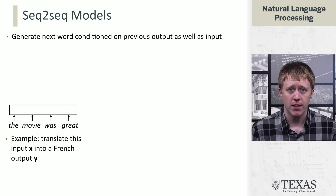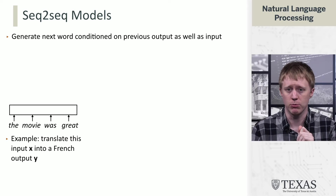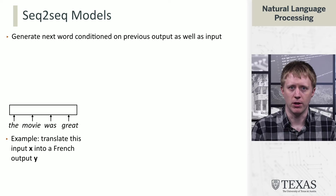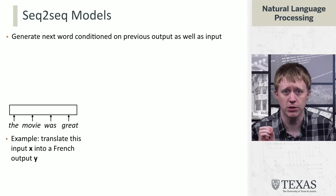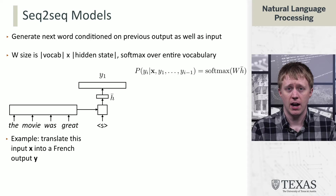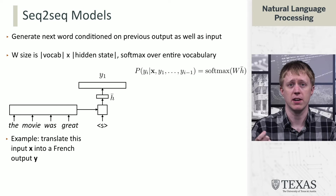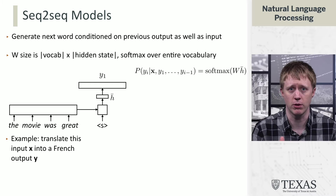So what are seq2seq models? These are models that generate next words conditioned on the previous output — very similar to what language models do — as well as their input. If we want to translate a sentence into French, we have an input x ('the movie was great'), and we start generating an output sequence like language modeling: we produce a contextualized representation, form a distribution via softmax over the vocabulary, and get our first predicted token y1.